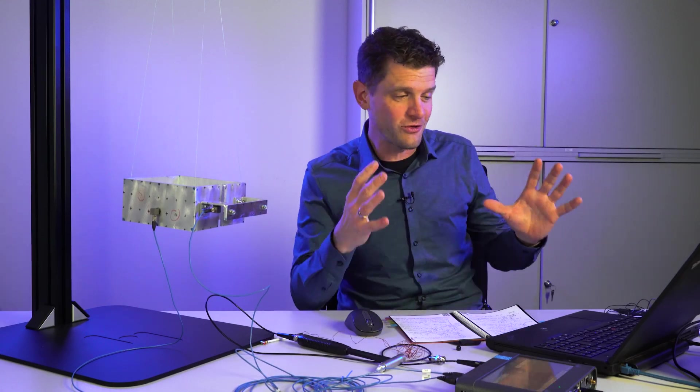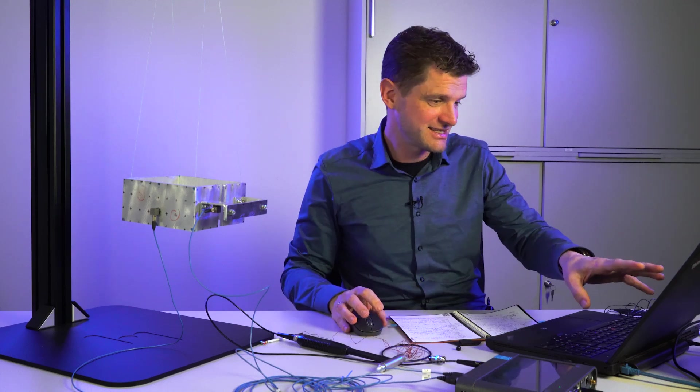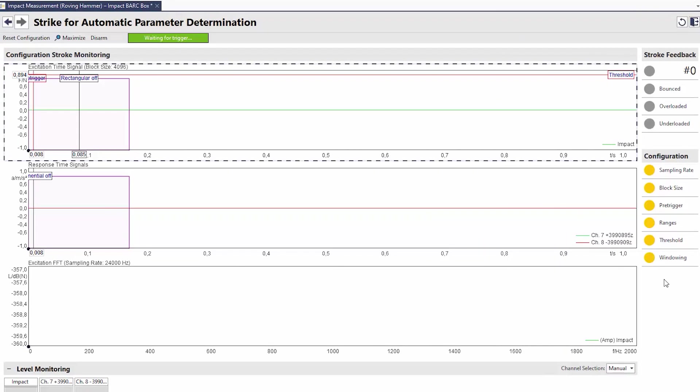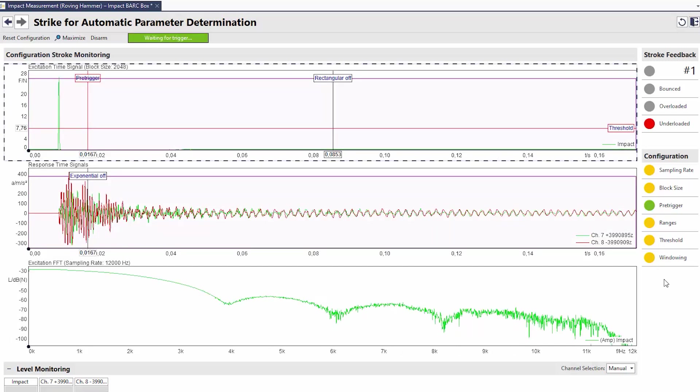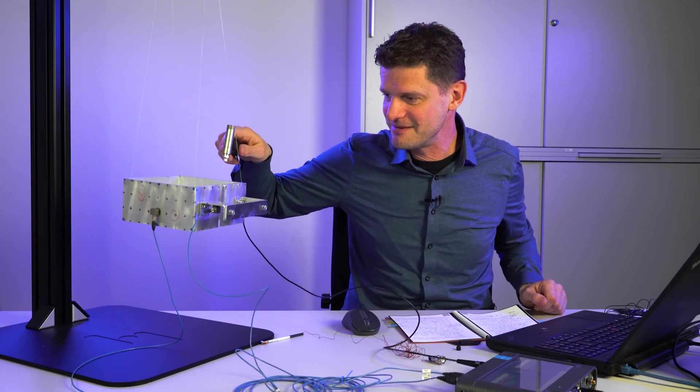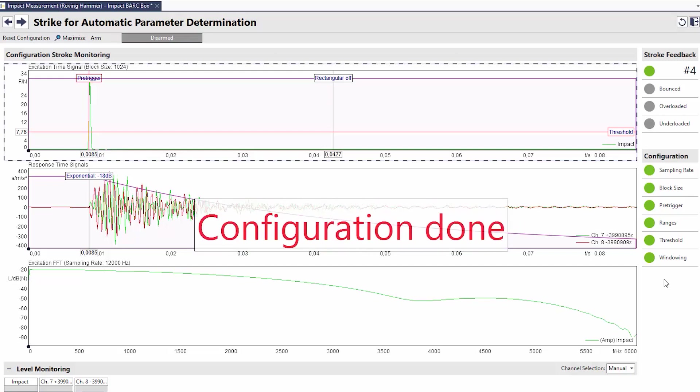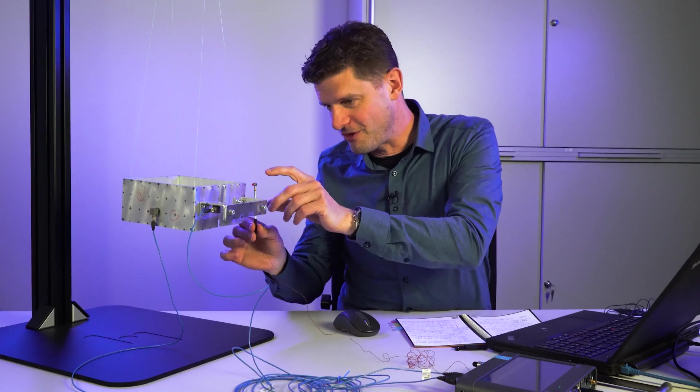What you need is an overview of all the settings at once. Like here in this software. Here are all the parameters that have to have been set. All I have to do is just strike the object. If you measure it and check out the right pre-trigger, the right block size, just keep on striking. And software checks all the parameters at once. If you hear that noise, you see all the traffic lights are green. All settings are done perfectly to match this measurement object. And you will get good results. So now we can measure all the points.